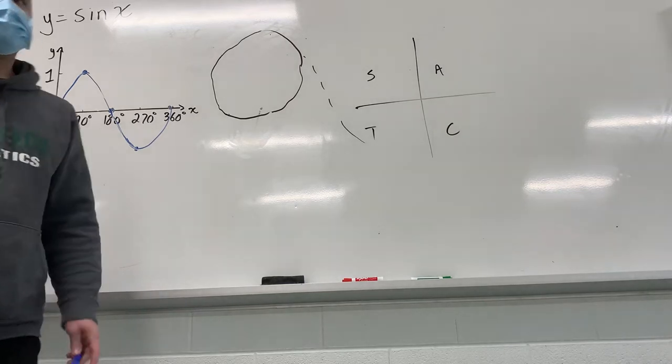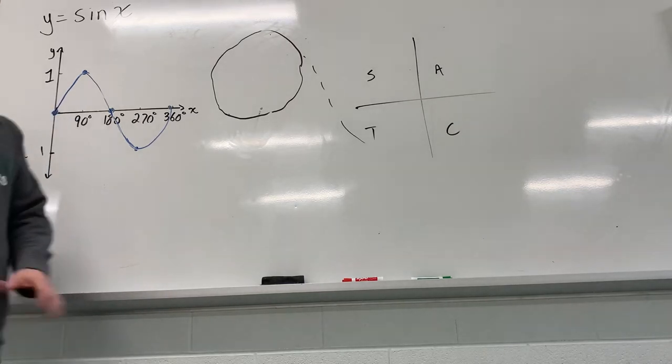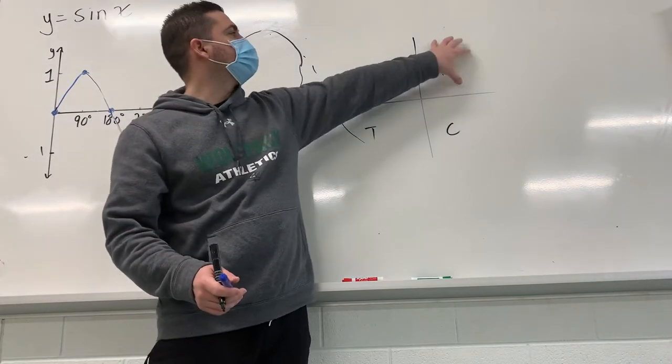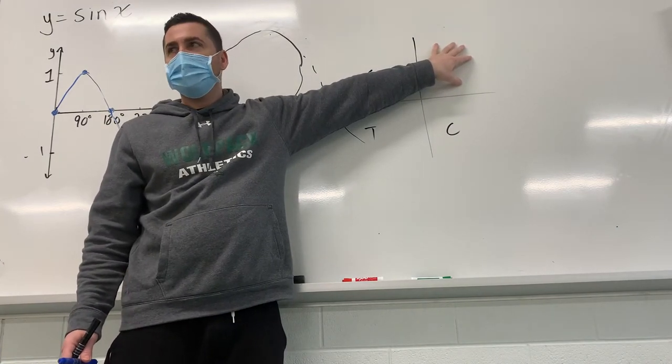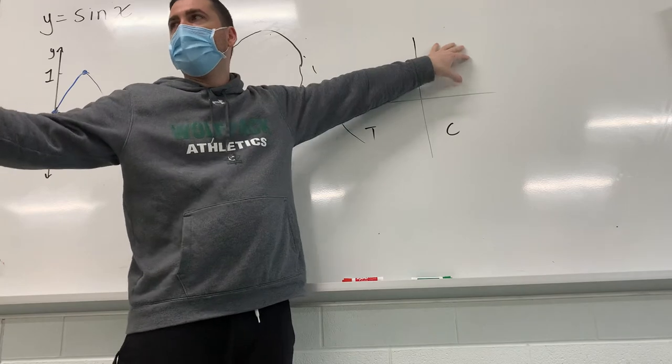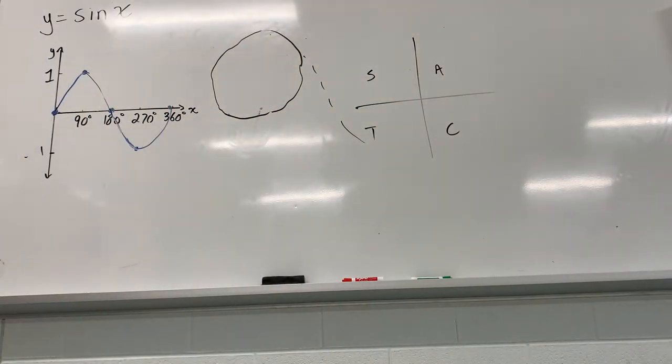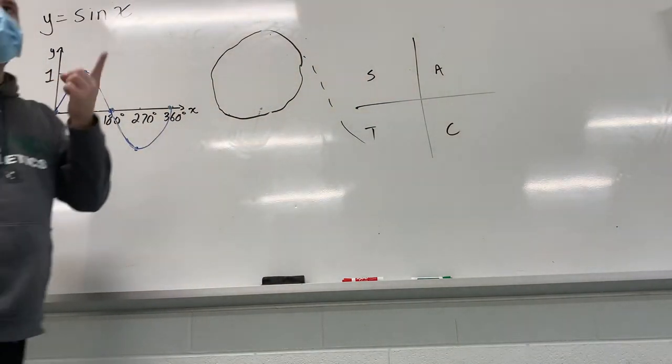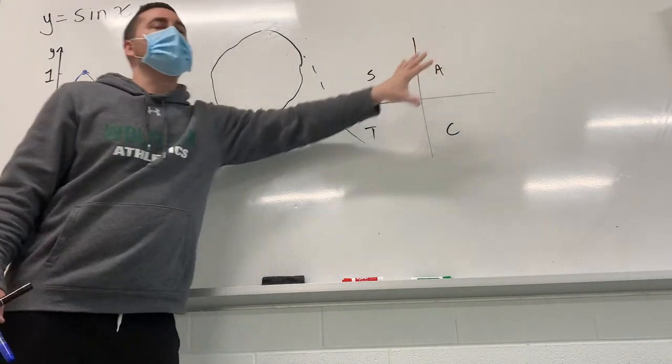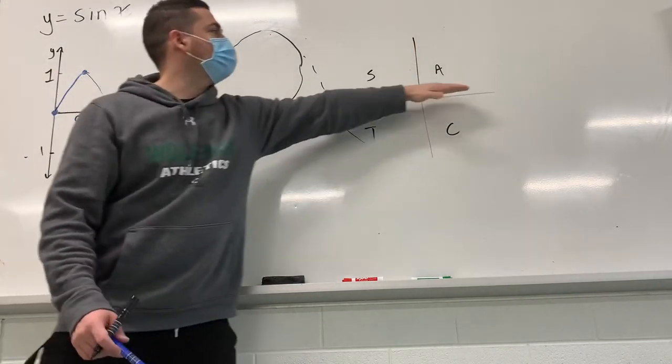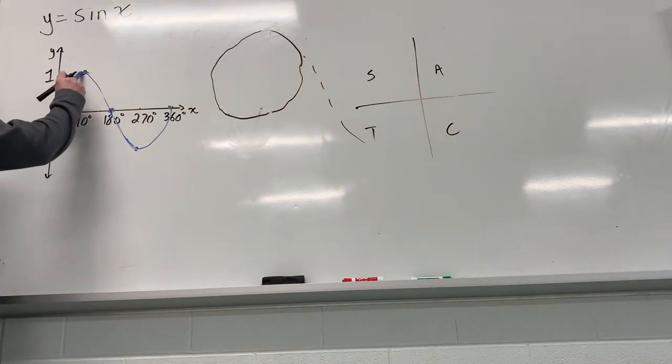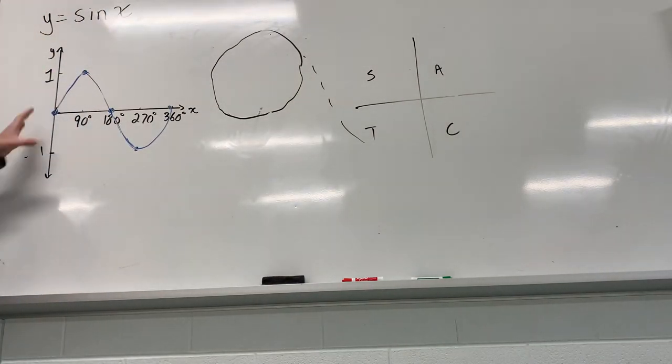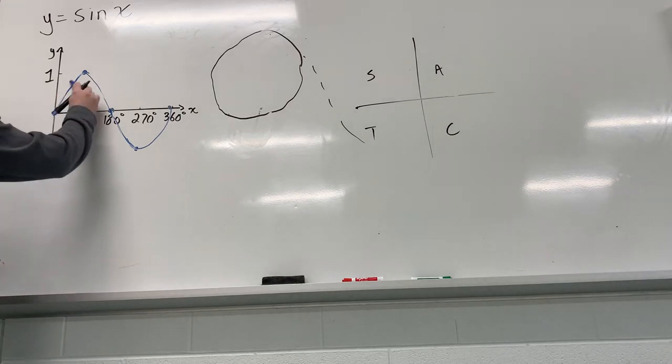Okay, so when we learn the CAST rule, this first quadrant means what? So what's the A stand for? All. All what? All ratios are positive. Okay, so the sine, cosine, and tan are all positive here. Okay, so this first quadrant goes from 0 to 90. So if you look at here, from 0 to 90, we are positive. Okay, so we're positive between 0 and 1.